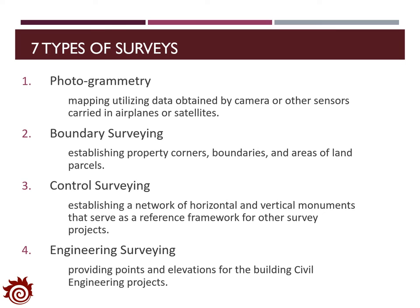Based on the functions and technologies applied, surveying can be categorized into seven types. The first one is the photogrammetry survey, which utilizes data obtained by cameras and other sensors carried in airplanes or satellites to complete mapping tasks — Google Satellite view is one typical example. The second one is the boundary survey, which uses appropriate tools to establish property corners, boundaries, and areas of land parcels. The third one is the control survey, whose purpose is establishing a network of horizontal and vertical monuments that serve as a reference framework for other surveying projects.